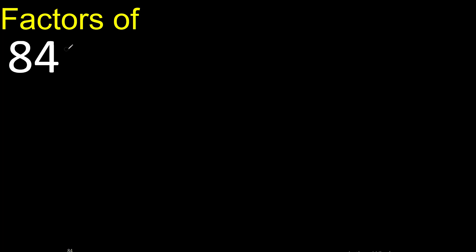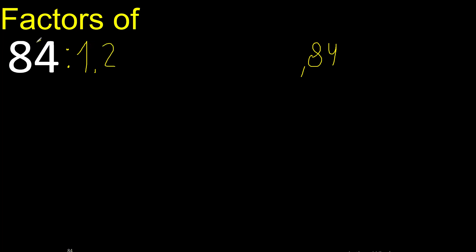Factors of 84. Always start with 1. 84 divided by 1 is 84. Next is 2, 84 divided by 2 is 42. Next is 3,